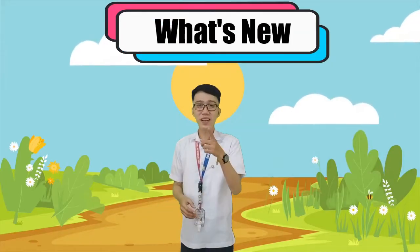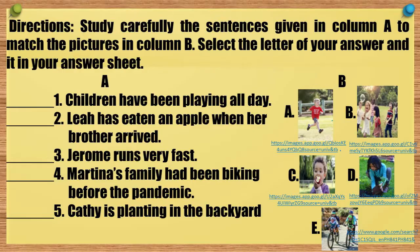And now, you are ready for a new lesson. Directions: Study carefully the sentences given in column A to match the pictures in column B. Select the letter of your answer and write it in your answer sheet. Number one: Children have been playing all day. Number two: Leah has eaten an apple when her brother arrived. Number three: Jerome runs very fast. Number four: Martina's family had been biking before the pandemic. And number five: Cathy is planting in the backyard.